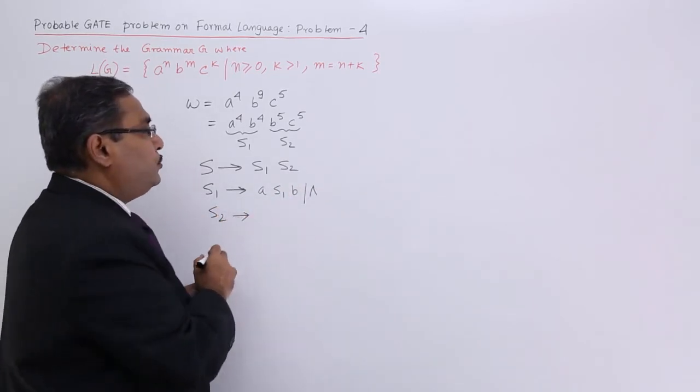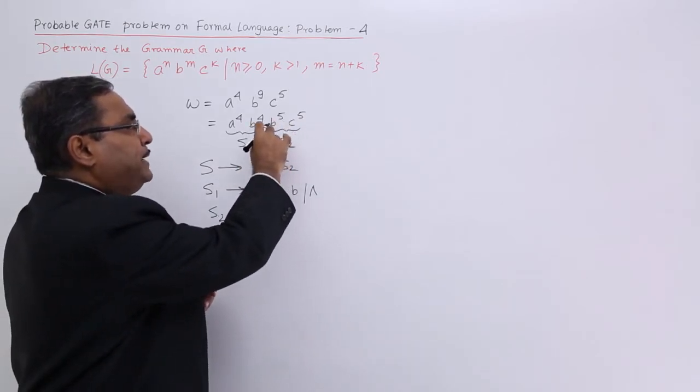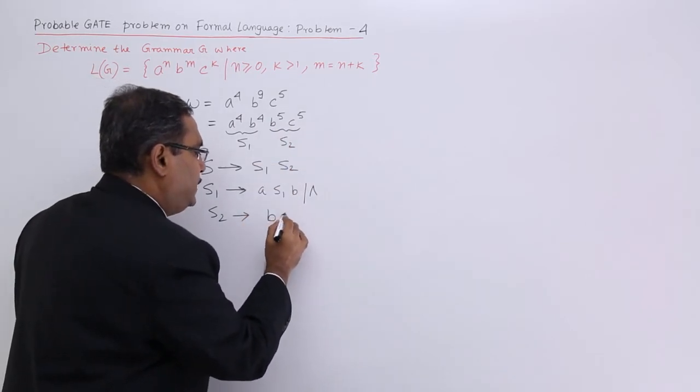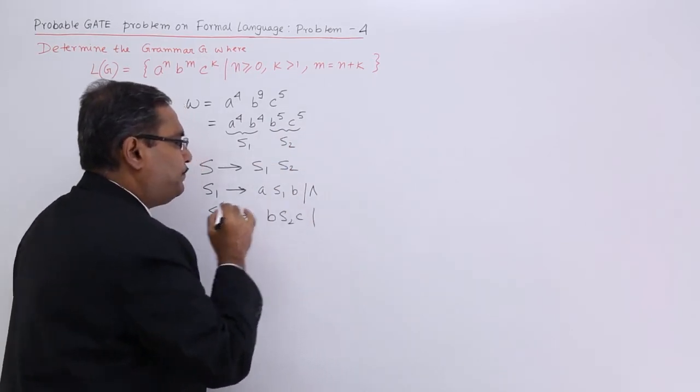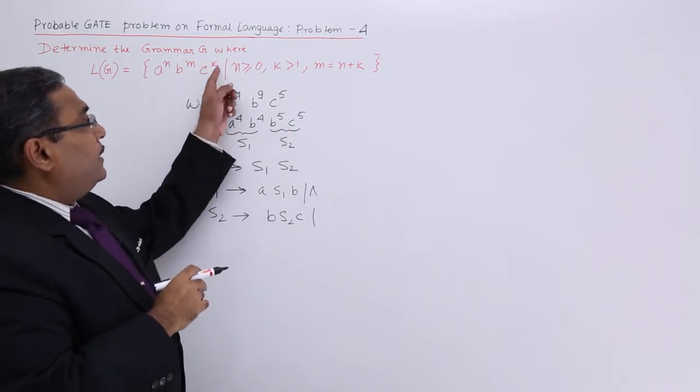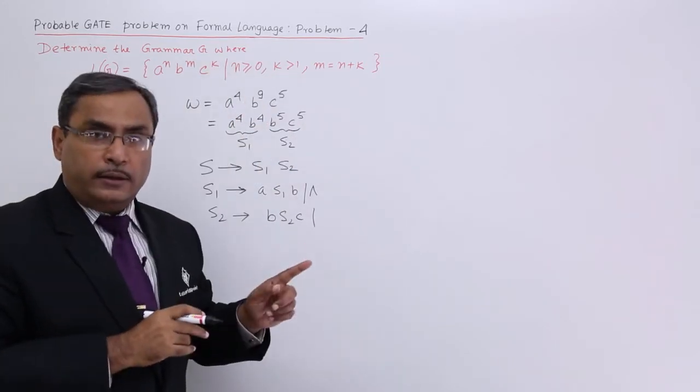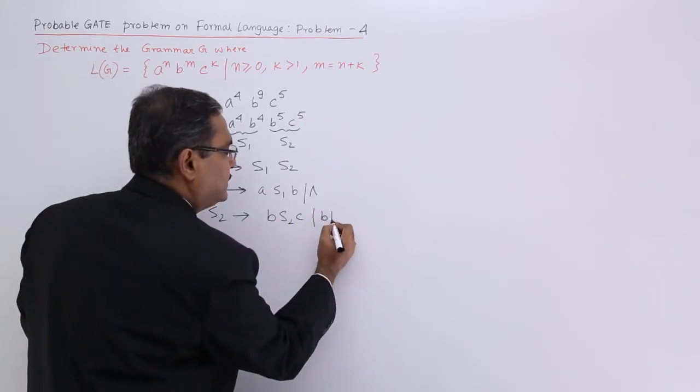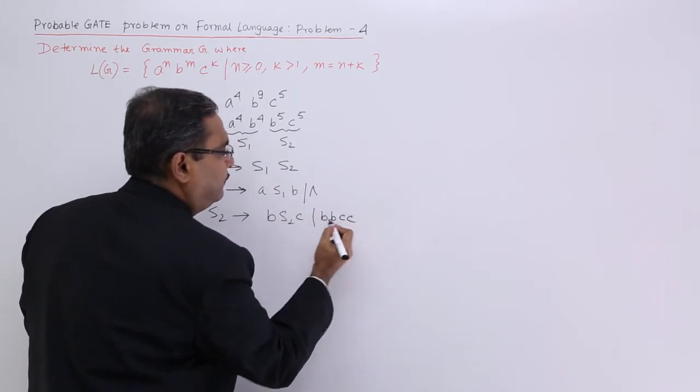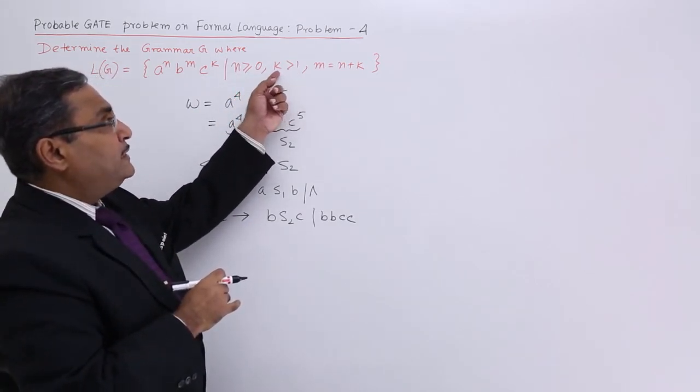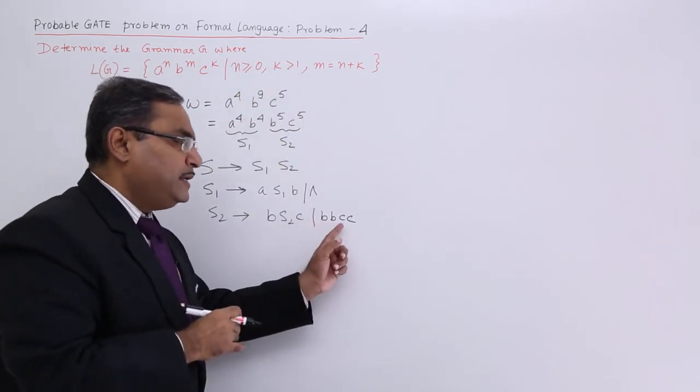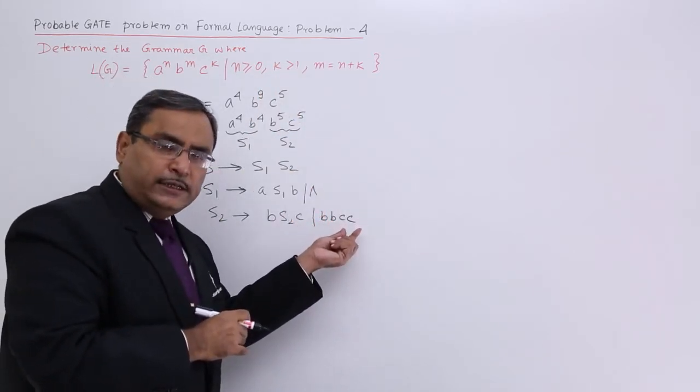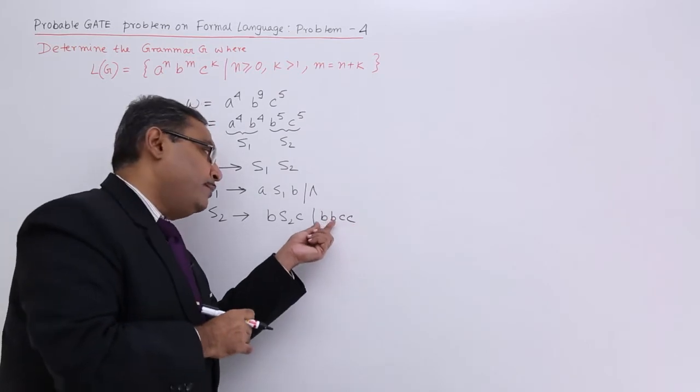Now s2, s2 will be responsible to produce b and c in this way. At first b will be coming, then c will be coming. So b s2 c. Now see, for c, k should be greater than 1. That means at least 2 times c will come. So I can write this one as b b c c. It is greater than 1. If it is greater than or equal to 1, then I shall go for b c. But as it is greater than 1, so I will be writing this one b b c c. So at least 2 times c will come and similar number of times b will be coming.